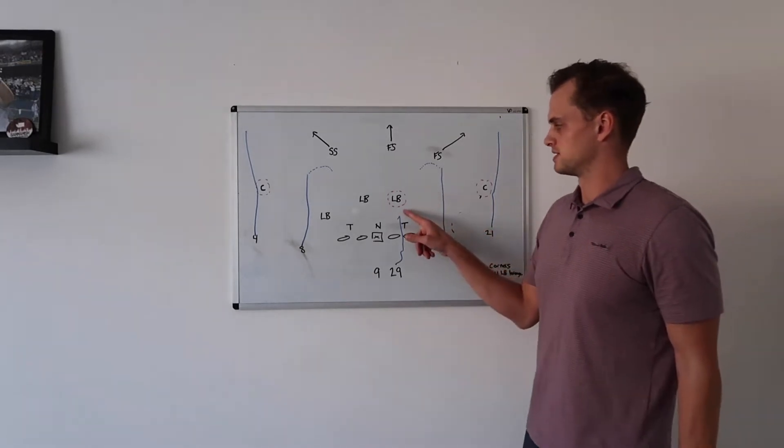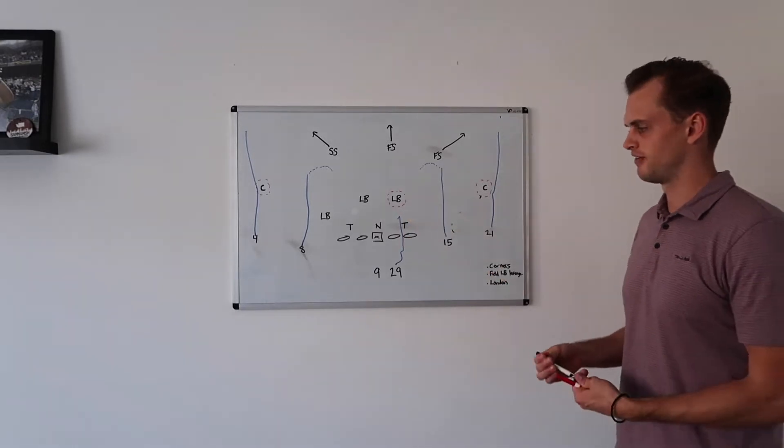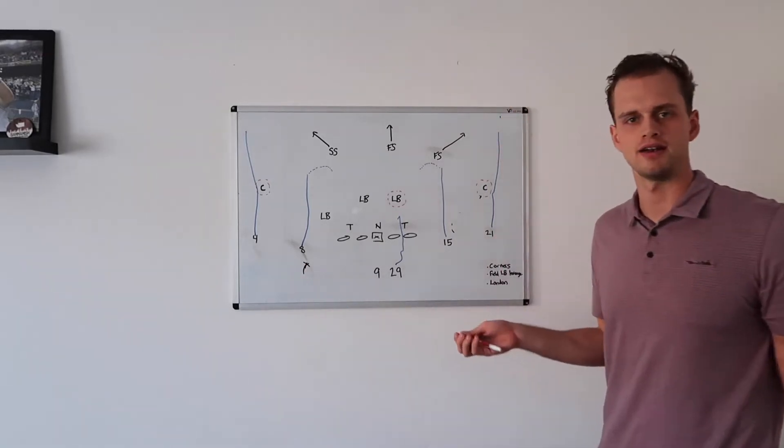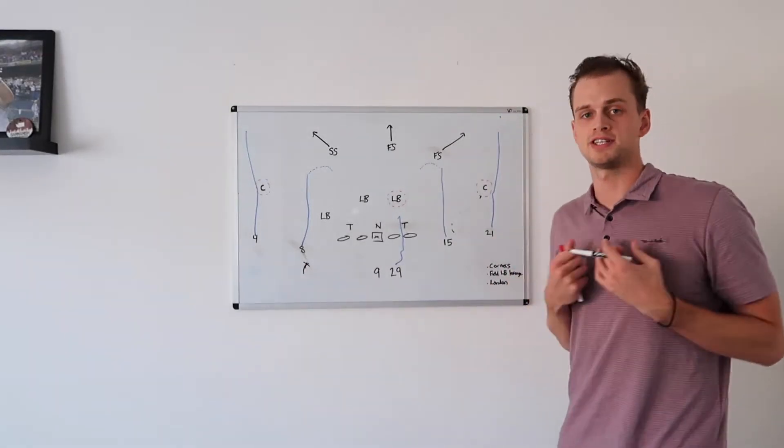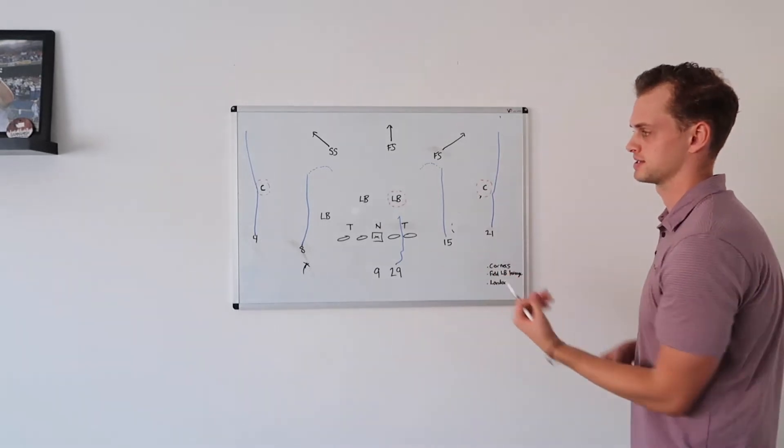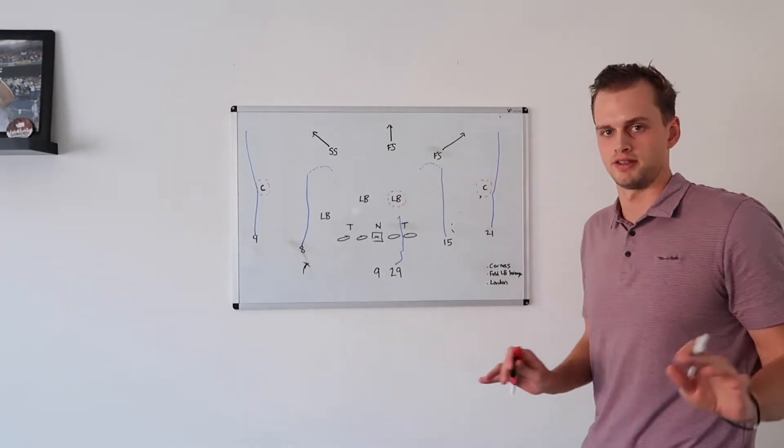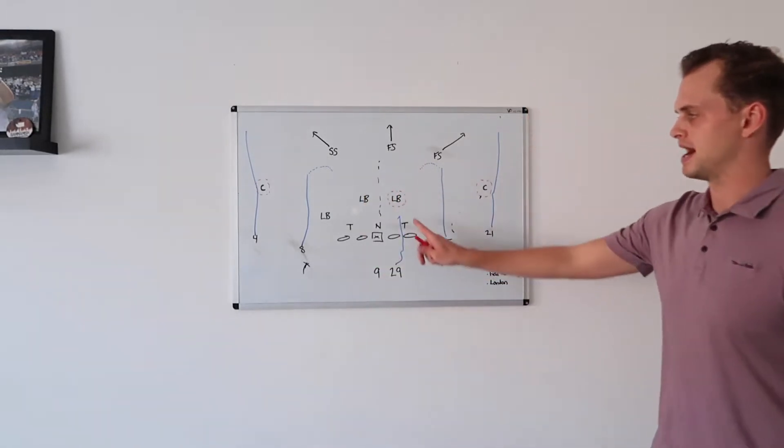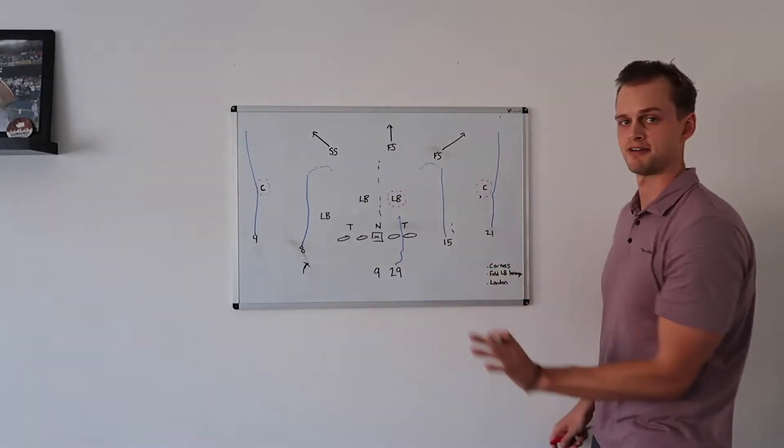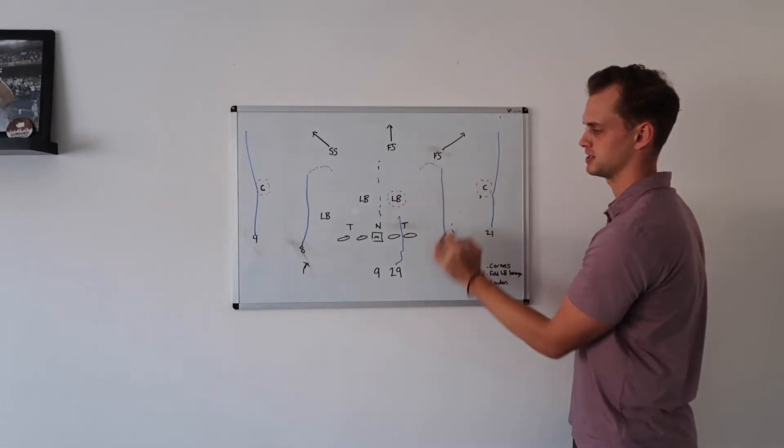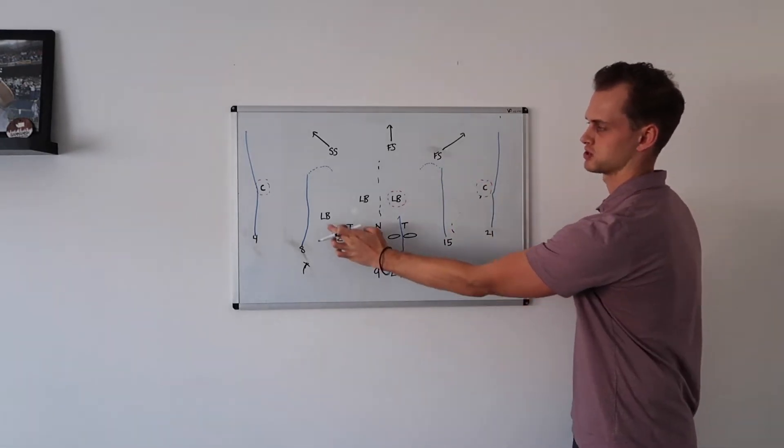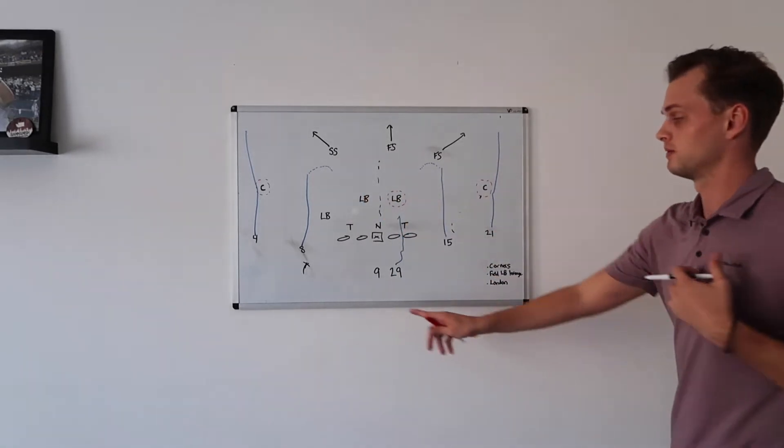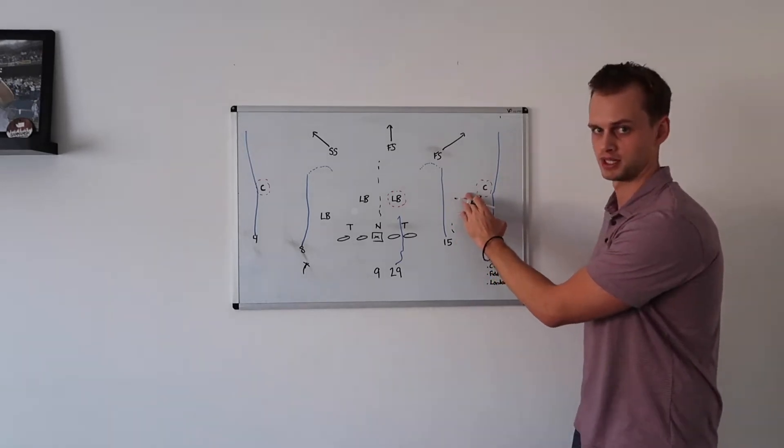The other guy I want to reference is this field linebacker. So Keaton Slovis, he elects to go to Amon Ra side, which you can't go wrong, but if this is me, I'm going to Drake London side. It's just math. If you drew a line down the middle of the field, how many defenders are to this side? One, and then maybe two. On this side, there's one, two, and then three guys that can get into play.